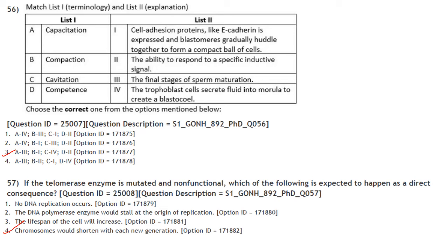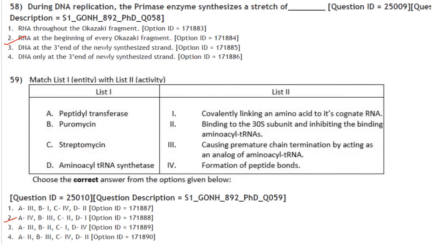If the telomerase enzyme is mutated and non-functional, chromosomes would shorten with each new generation. Answer is option 4. During DNA replication, the primase enzyme synthesizes a stretch of RNA at the beginning of every Okazaki fragment.